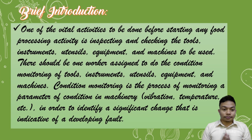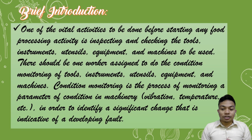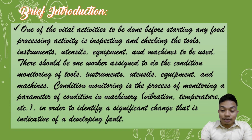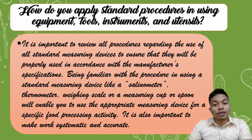Let us start with a brief introduction. One of the vital activities to be done before starting any food processing activity is inspecting and checking the tools, instruments, utensils, equipment, and machines to be used. There should be one worker assigned to do the condition monitoring — it is the process of monitoring a parameter of condition in machinery, like vibration and temperature, in order to identify a significant change that is indicative of a developing fault. How do we apply procedures in using equipment, tools, instruments, and utensils?